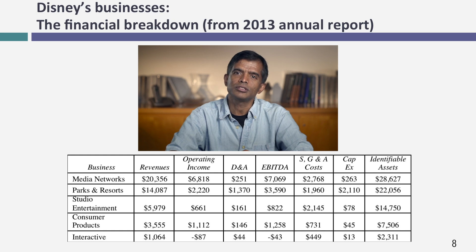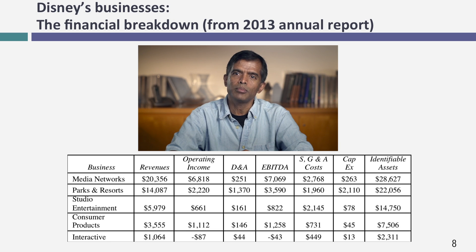So let's try this for Disney. One of the advantages of applying this approach to Disney is that Disney gives a fair amount of detail about the businesses they're in. Disney breaks themselves down into five businesses. The first is broadcasting, which includes Disney Cable, ABC, and of course ESPN.